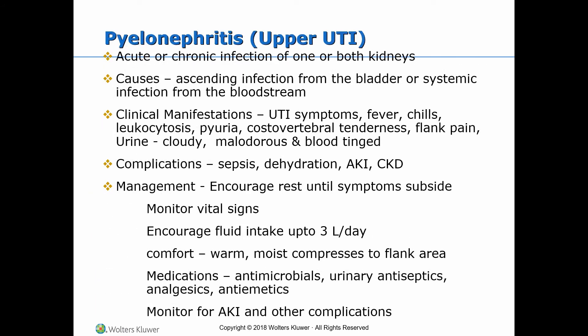Next, pyelonephritis. Acute or chronic infection of one or both kidneys is pyelonephritis. Acute pyelonephritis usually leads to renal abscess, which can ultimately lead to glomerulonephritis. Chronic pyelonephritis may eventually result in scarring and non-functioning kidneys and is a cause of acute or chronic kidney disease needing renal replacement therapy.